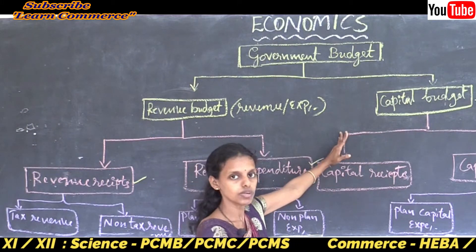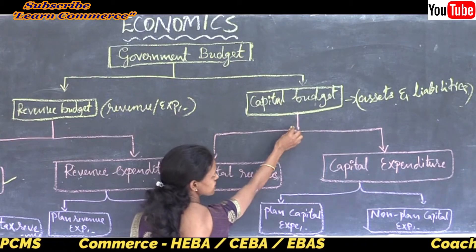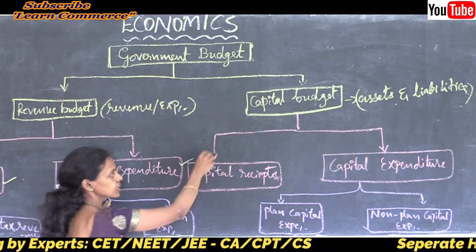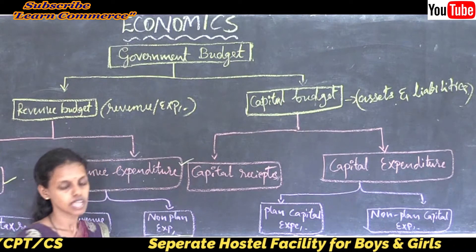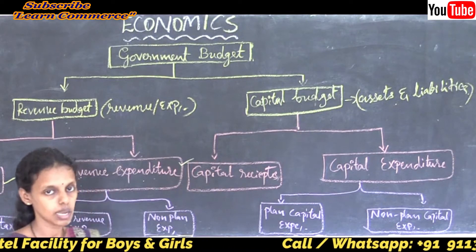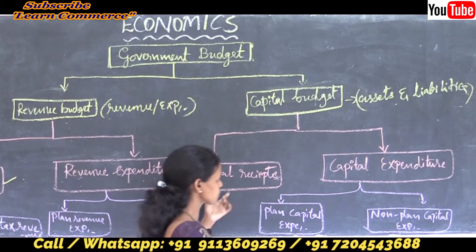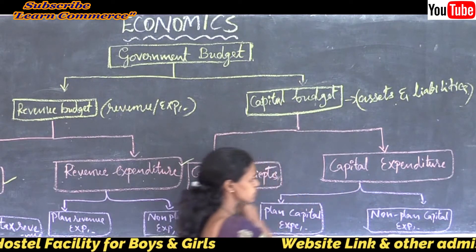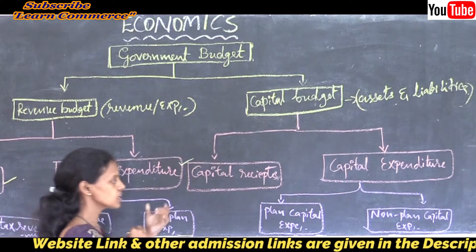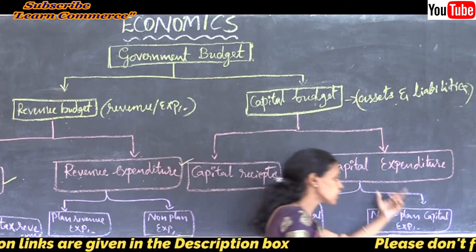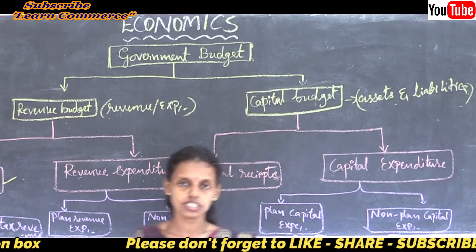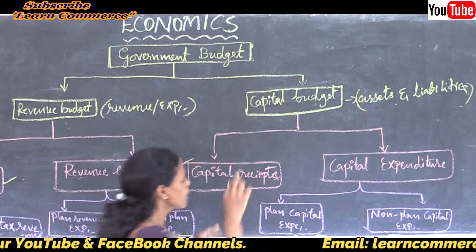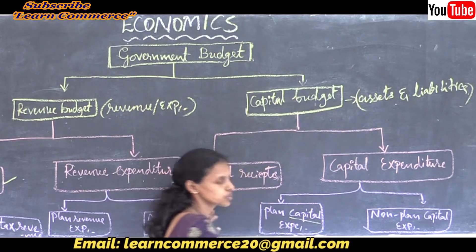Next, let us see the components of capital budget. Capital budget consists of assets and liabilities of the government budget. Capital receipts are receipts received from capital gains — it may include profits or inventories. Capital expenditure also has two types: planned capital expenditure and non-planned capital expenditure.